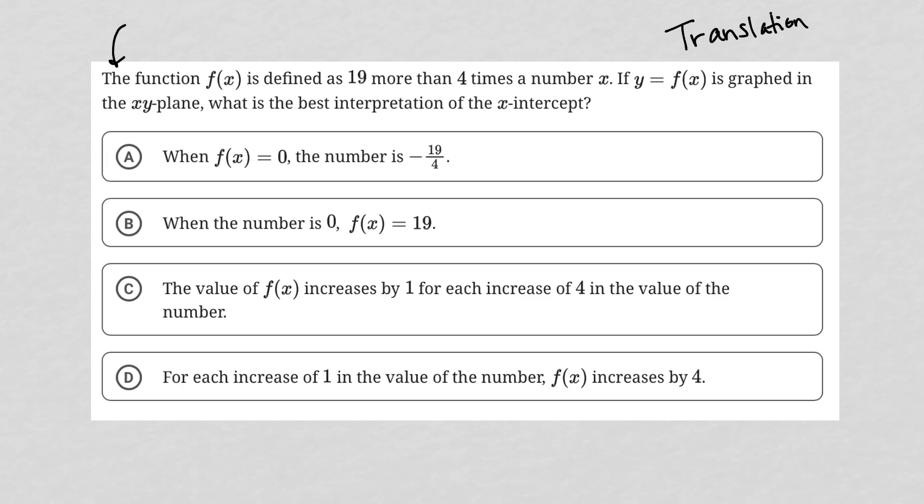So f of x is defined as f of x equals 19 more than. So that means I'm starting off with something and I'm adding 19. If I have 19 more than you, I need to first of all know what you have first and then add my 19 to that. So it's defined as 19 more than four times the number x. That's what we have here at the blank, 4x. So f of x equals 4x plus 19 is a translation for that first sentence.